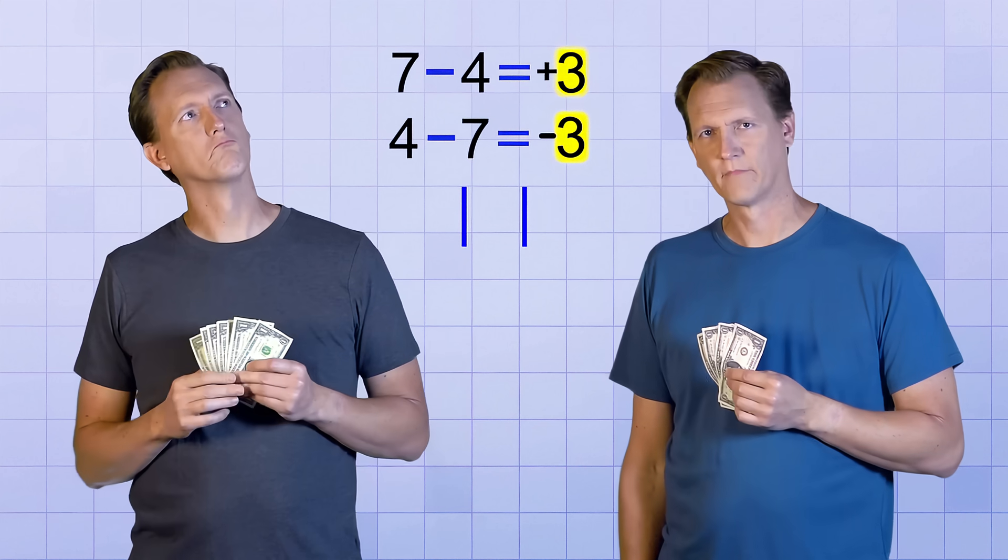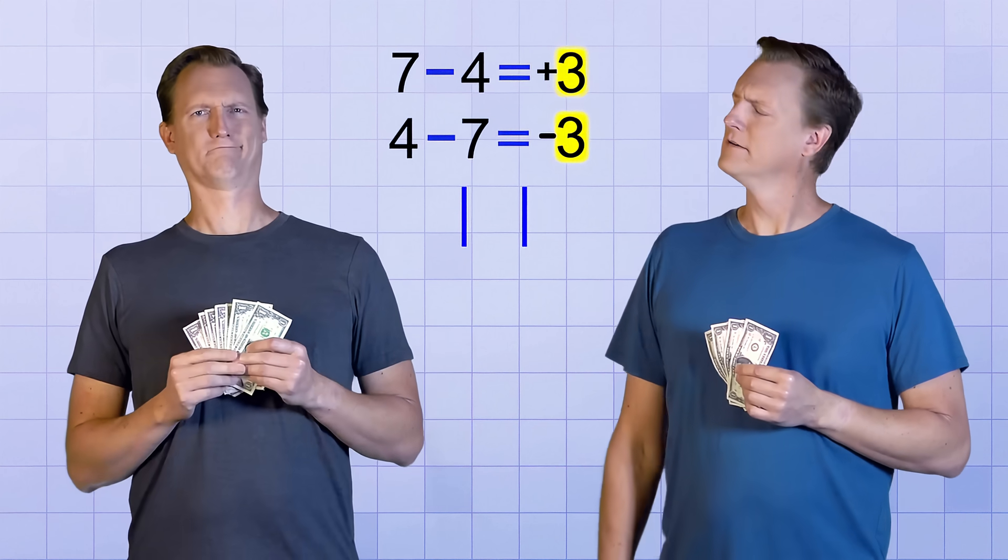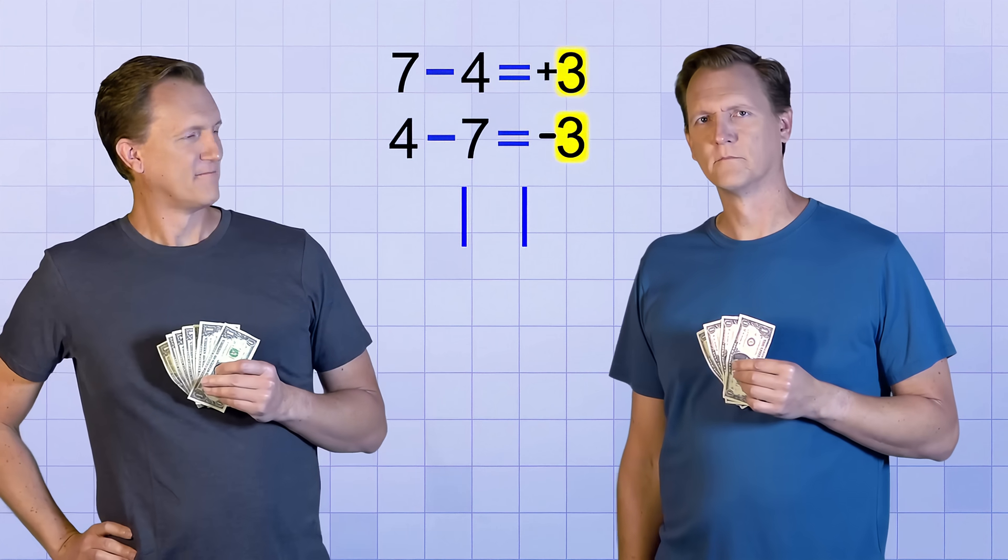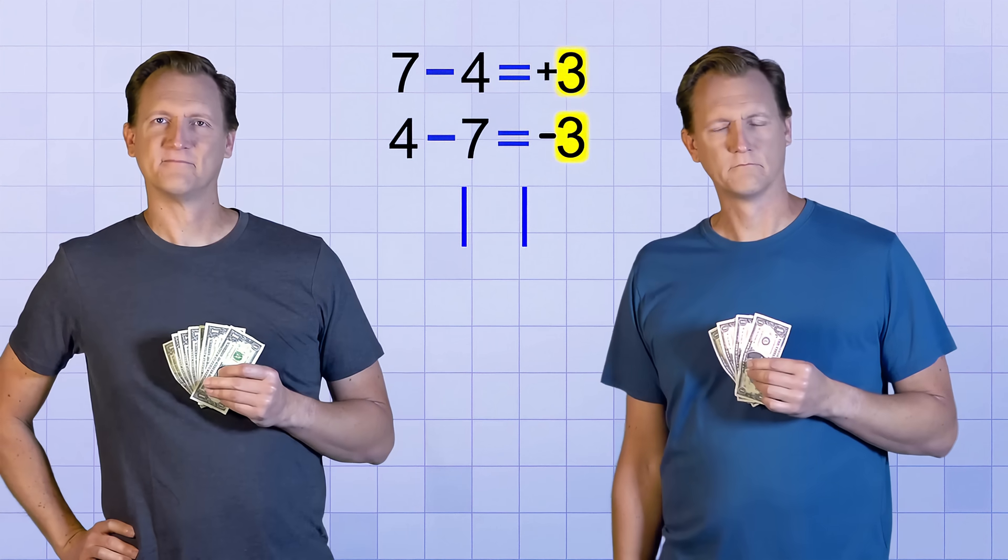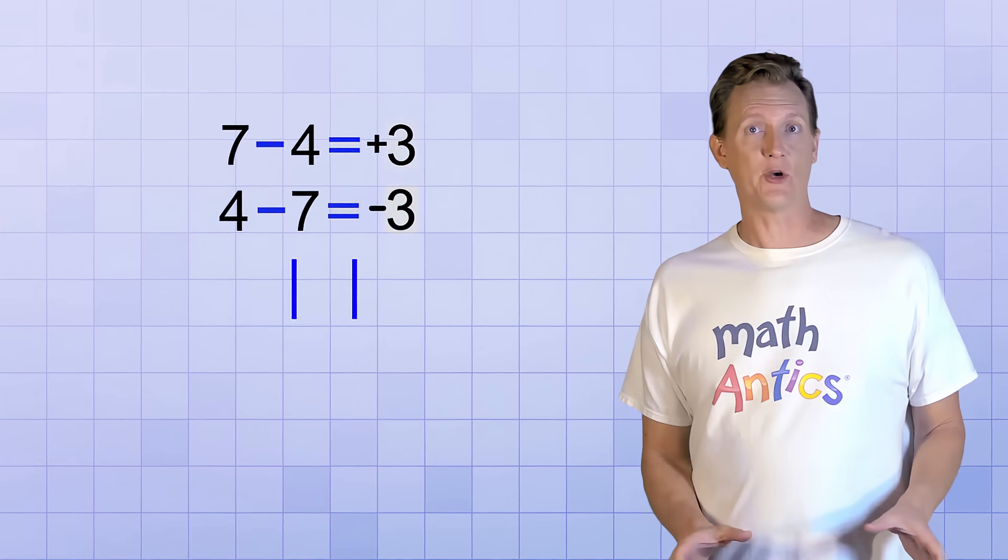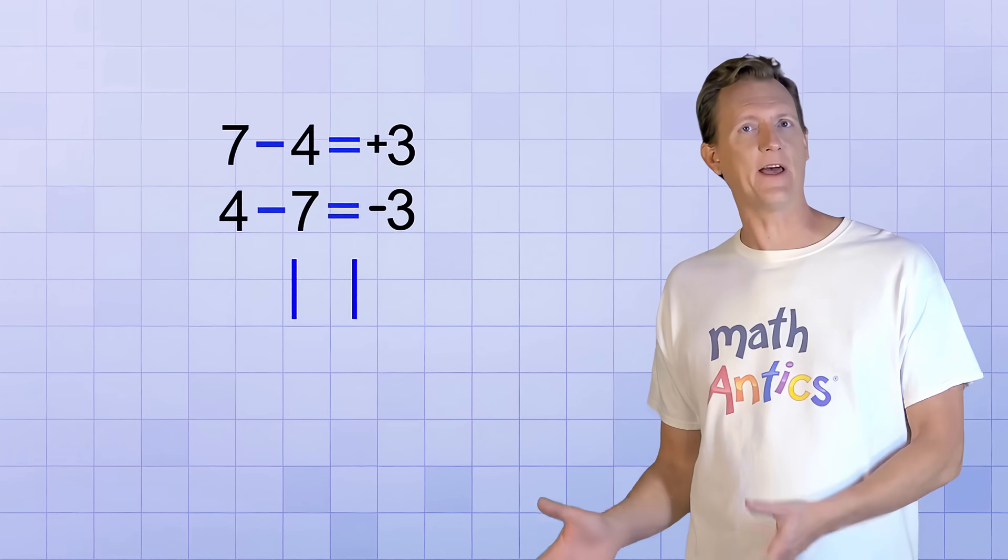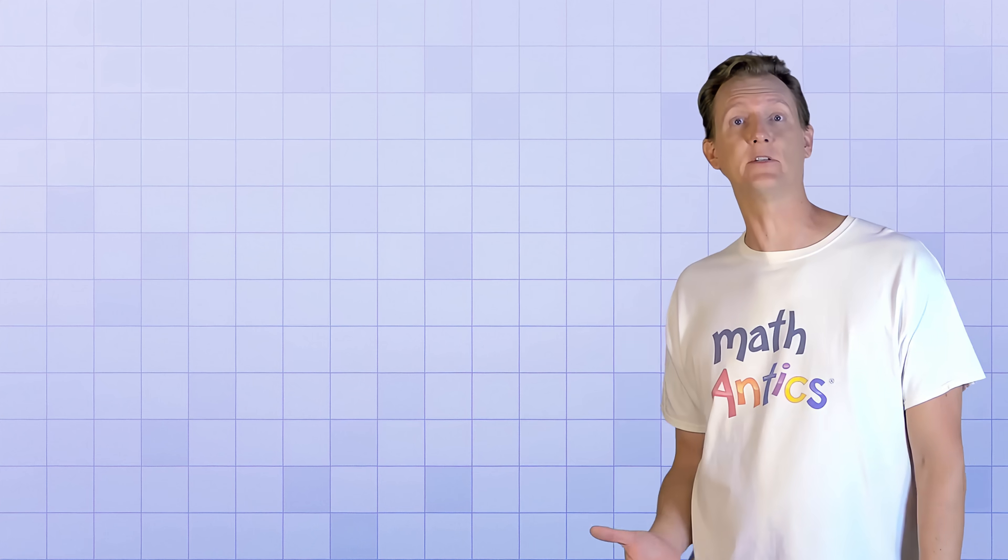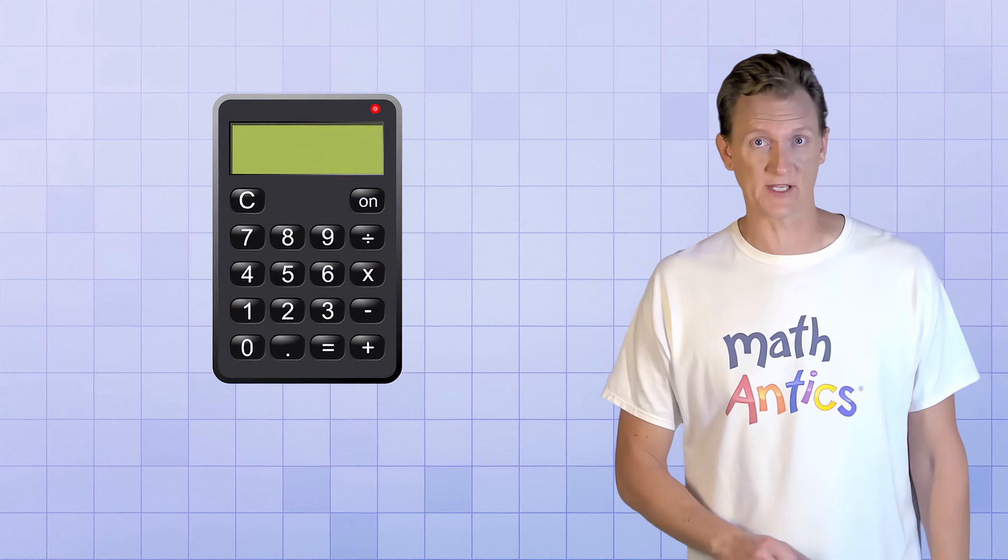And like I said, we don't really care who has more money, we just want to know how much that difference is. So in this problem, we only need the magnitude of the difference. No matter which way we do the subtraction, we just take the absolute value of the answer to get what we want. And this idea can be really helpful when you're entering numbers into your calculator to solve math problems like this one.